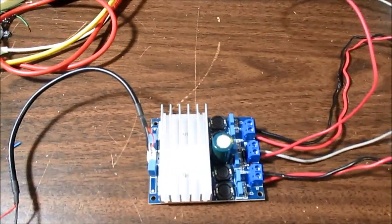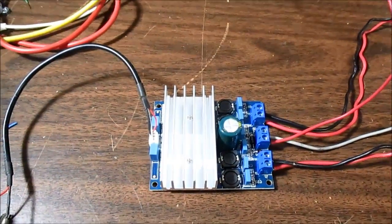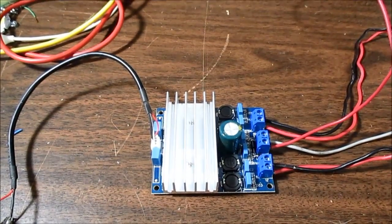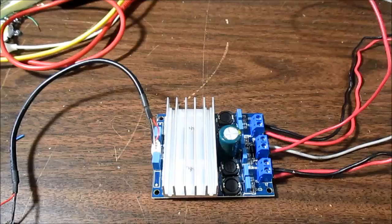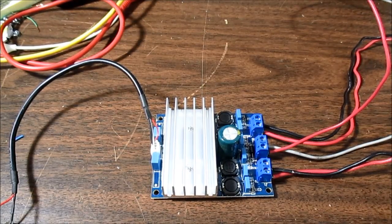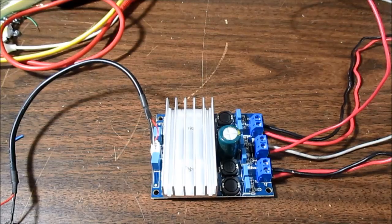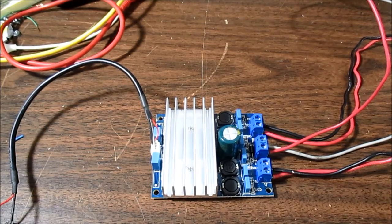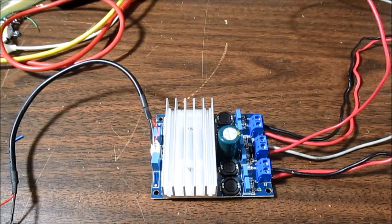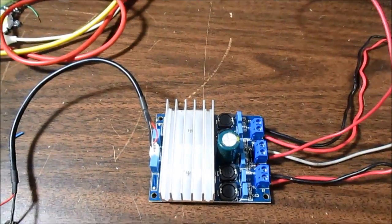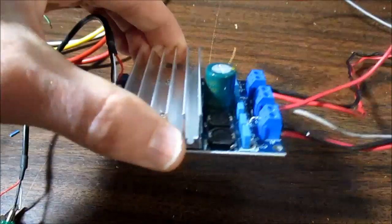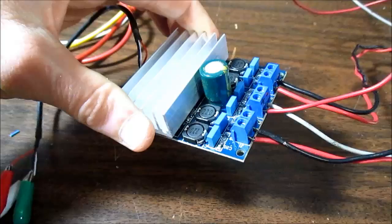Like I always say, both channels driven, maximum power before clipping, so it's got to be clean power, none of this clipping 10% distortion rubbish. I like to keep it well below 1% as a matter of fact. So I will proceed to test this chip amp, class D chip amp board, and see how it does.